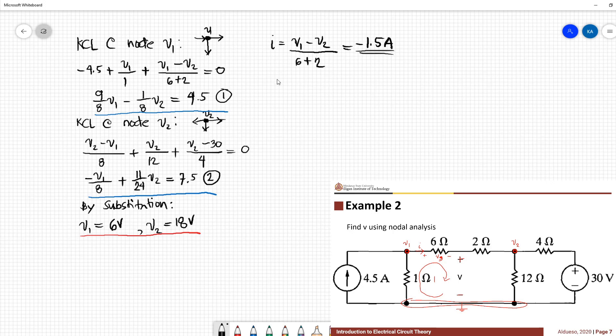So now we can apply KVL at loop 1. KVL at loop 1, we have negative V1 plus V3 minus V equal to 0.